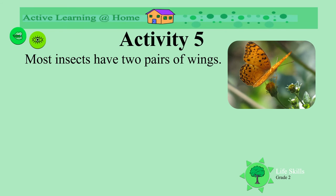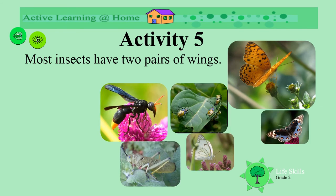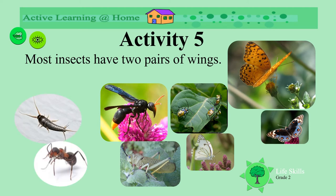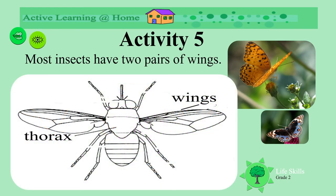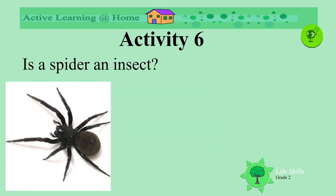Look at the different types of wings — how varied they are from insect to insect. Some insects have no wings at all. The wings are attached to the thorax.